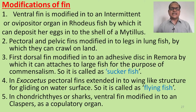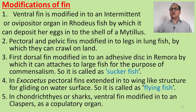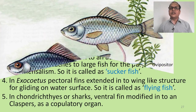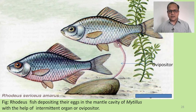In Exocoetus or flying fish, the pectoral fins are extended to form a wing-like structure for gliding on the water surface. It is also called flying fish. In Chondrichthyes or sharks, the ventral fin is modified into claspers as a copulatory organ. This is the Rhodius in which an ovipositor deposits its eggs into the shell of Mytilus.